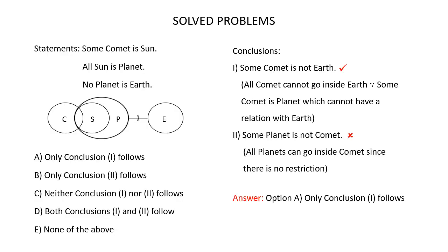In this problem, you are given three statements and two conclusions. Find out which of these conclusions follow from the logic given in these statements. To do that, first you have to draw a Venn diagram for these statements. So first let's draw a Venn diagram. Some comet is sun.